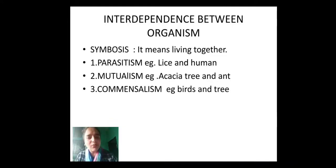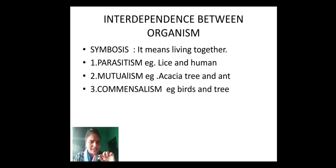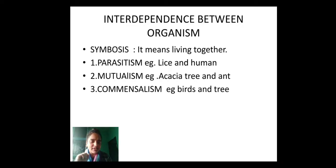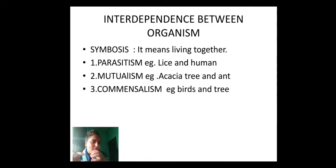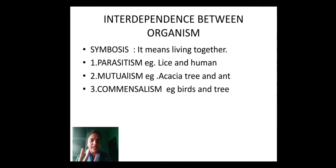One more example of mutualism: a bird called the oxpecker lives on the back of a zebra. It eats all the small insects and pests present on the back of the zebra. Both organisms get benefit — the bird gets its food, and the zebra gets cleared of germs and organisms on its back. Mutualism is a relationship between two organisms where both get some kind of benefit from each other.